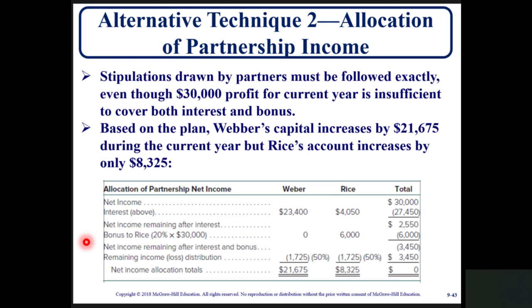The allocation of partnership income schedule must be followed exactly even though the $30,000 profit for the current year is insufficient to cover both interest and bonus. Based on the plan, Weber's capital increases by $21,675 during the current year, while Rice's account increases by $8,325. The schedule shows the $30,000 net income, interest allocation, net income remaining after interest, the bonus assigned to Rice, and the final allocation totals for each partner.